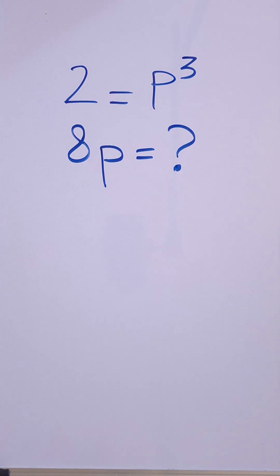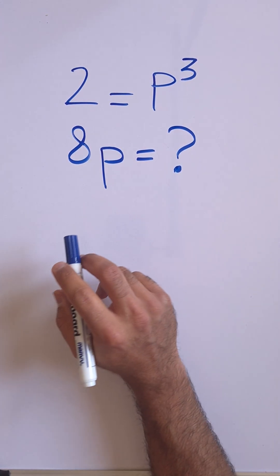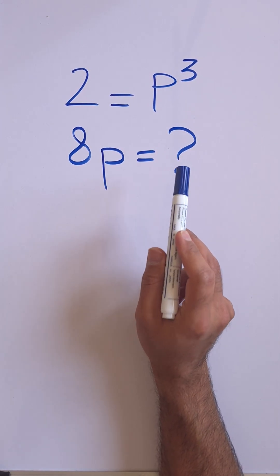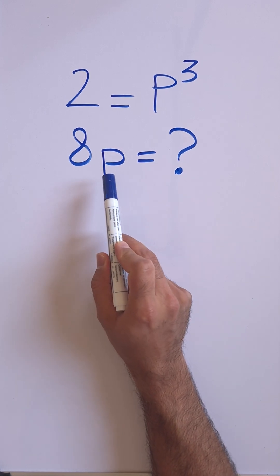All right, here is your daily dose of challenge on Prime Logic. Here is a very nice and tricky SAT question. 2 equals p to the power of 3, or p cubed. What is the value of 8p expressed in terms of p?